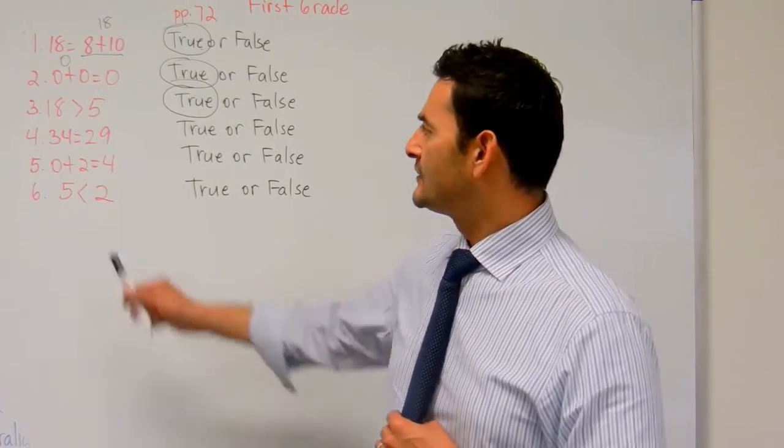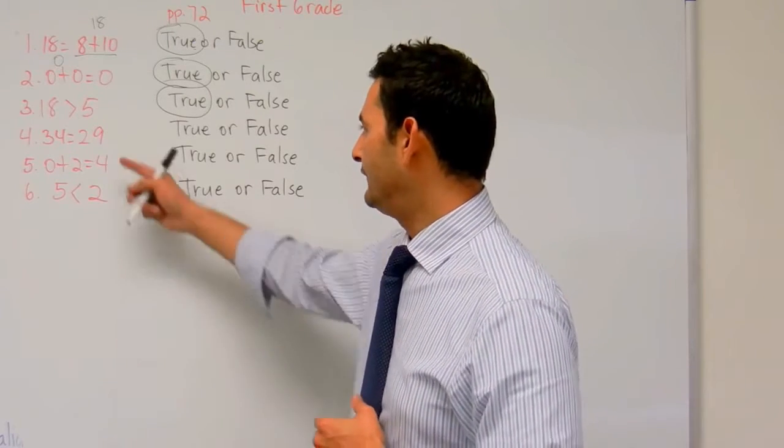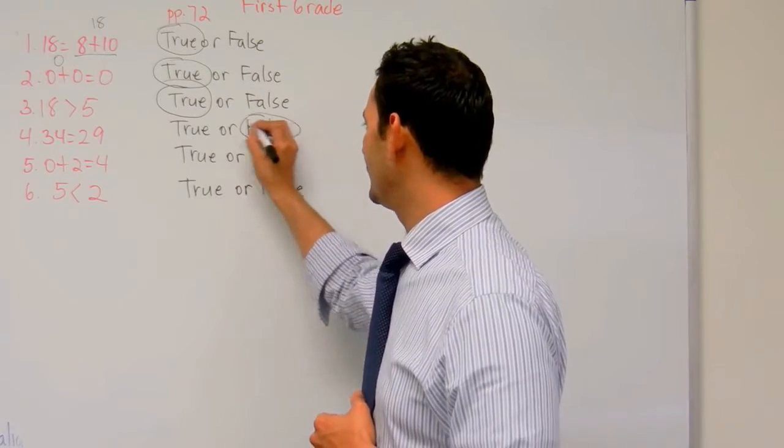Now let's take a look at the next one, number 4. Does 34 equal 29? No. It's not the same number. It's false. So let's go ahead and circle false.